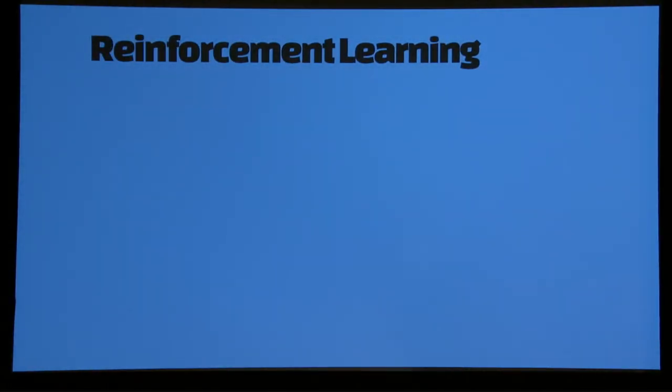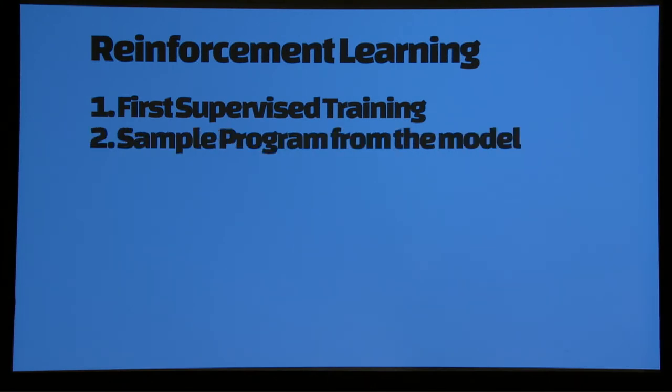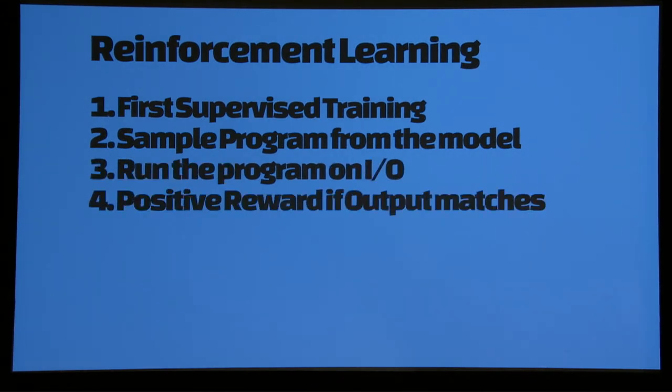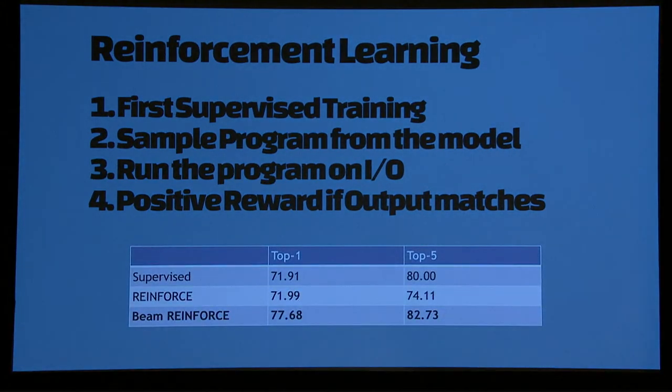But to do that analysis, we need an execution model which is non-differentiable. So we had to do some form of reinforce here. But we can't train it from scratch because the reward signal was very sparse. So we first train the supervised model, as we did for RobustFill. Then we start sampling from the model, we run the programs, and then we give a simple reward if the outputs are correct. It turns out actually doing this improves by about six to seven percent, the accuracy.